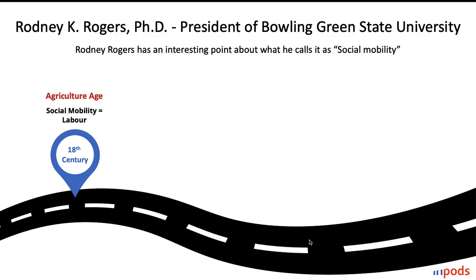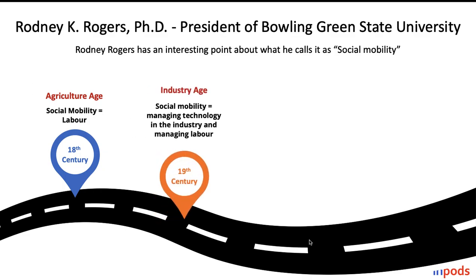He refers to the agricultural age, which started way back in the 18th century — that's when the class of labor emerged, creating social mobility through farming-generated jobs. When the industry age occurred, social mobility shifted to managing technology in industry and managing labor. Supervisors came into existence — intellectual individuals who understood how to use technology to manufacture things and also manage the labor working in their industry.